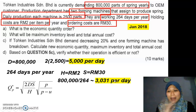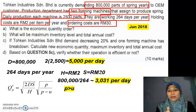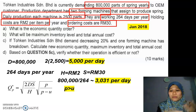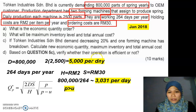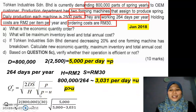Now we have two values and need to decide which is p (daily production) and which is u (daily usage). The rule of thumb: daily production must be bigger than daily usage, since the spring must be produced before it can be used. So p = 5,000 and u = 3,031. Now we have all the information to calculate Q.